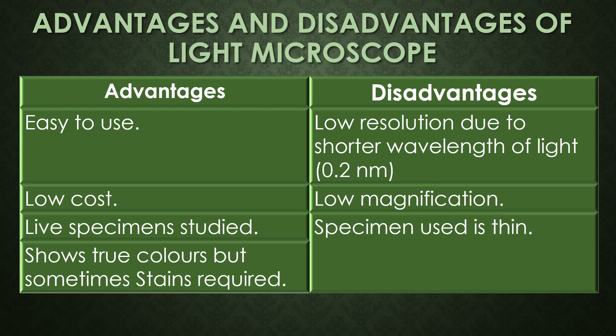The advantages and disadvantages of the light microscope: it has four advantages. First, it is easy to use. Second, it is low cost. Third, living specimens can be studied. Fourth, it shows true colors, though sometimes stains are required. Regarding disadvantages, it has three: the resolution is low at 0.2 micrometers, the magnification is low, and only thin specimens can be used.